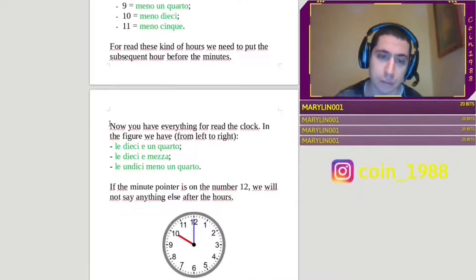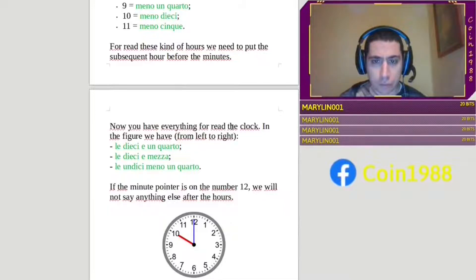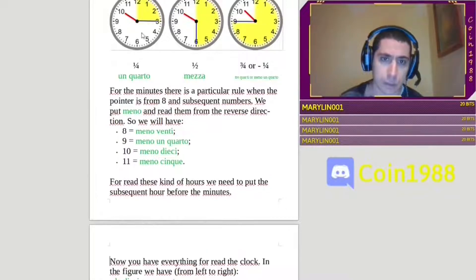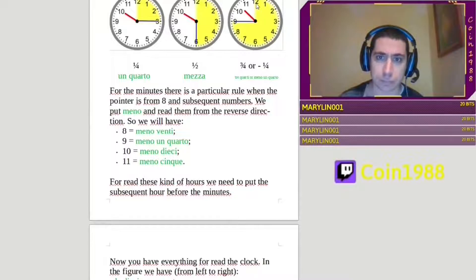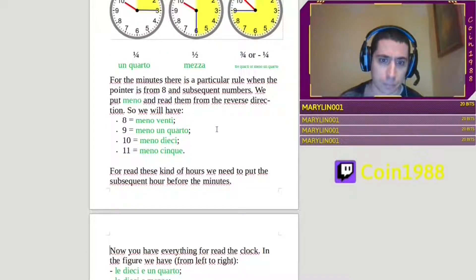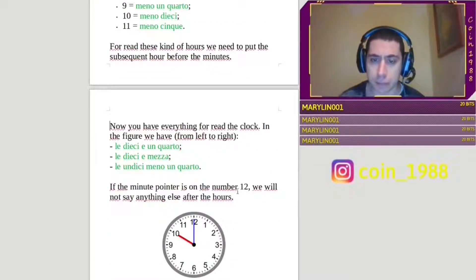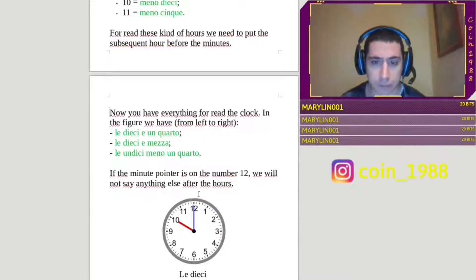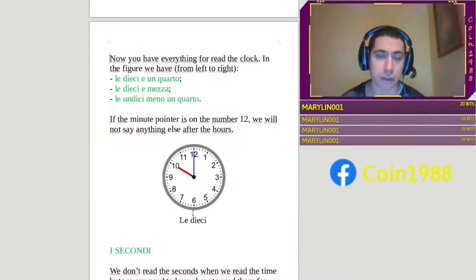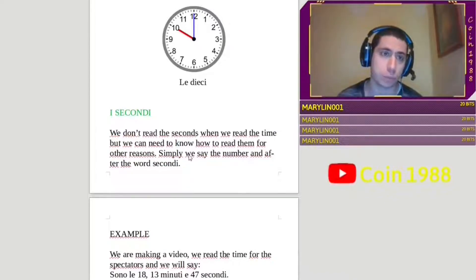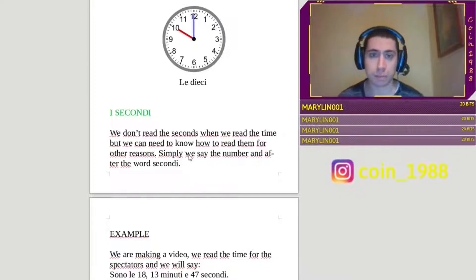In fact, you said something that there is right here. Here I say, now you have everything for read the clock. In the figure, we have, from left to the right, dieci e un quarto, dieci e mezza, undici meno un quarto. If the minute pointer is on the number 12, we will not say anything else after the hour. Like in this example, you say, le dieci, you don't say anything else in Italian, you say just, le dieci. Someone say, le dieci in punto, that mean exactly the 10, but le dieci is enough for understand, that is this time.